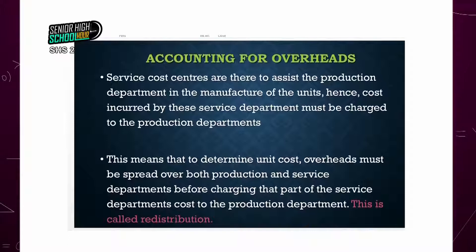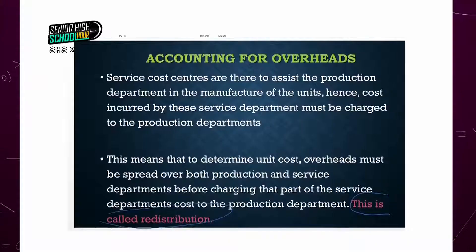Any costs incurred by the service department have to be charged to the production department. For example, if there is a maintenance service in an organization, whatever costs were incurred by that maintenance service have to be absorbed by the production department so that at the end of the day we can tell the total amount incurred. This means that to determine the unit costs, overhead must be spread over both the production and the service department before charging that part of the service department cost to the production department.